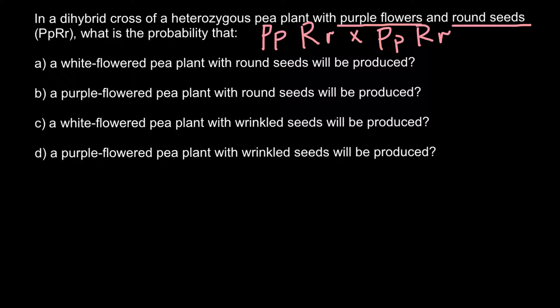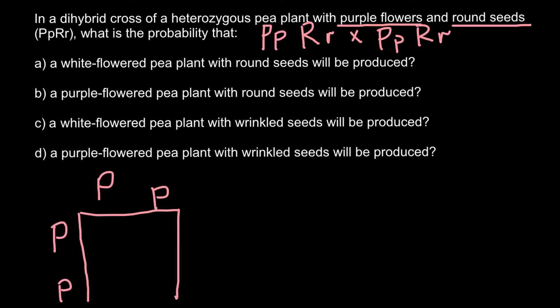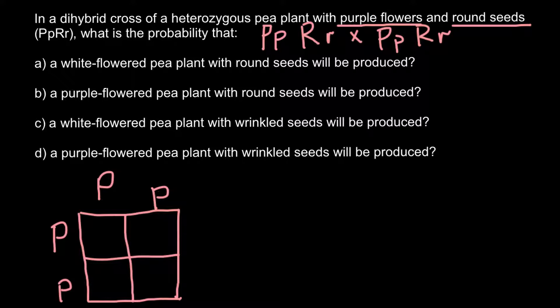So we can build a Punnett square for each gene separately. For the first trait — the color of the flowers — we cross capital P lowercase p with another genotype that is also capital P lowercase p. When we build the Punnett square we can find the probabilities of different colors. Capital P stands for the purple color and lowercase p stands for the absence of color, or white color.